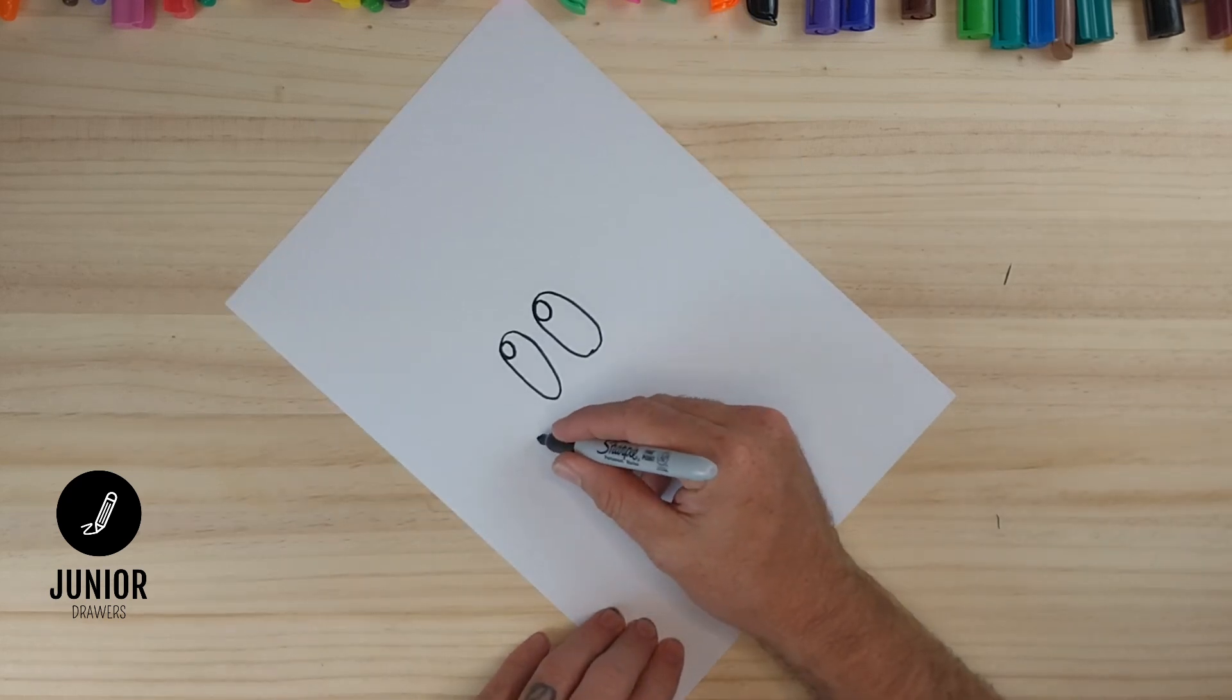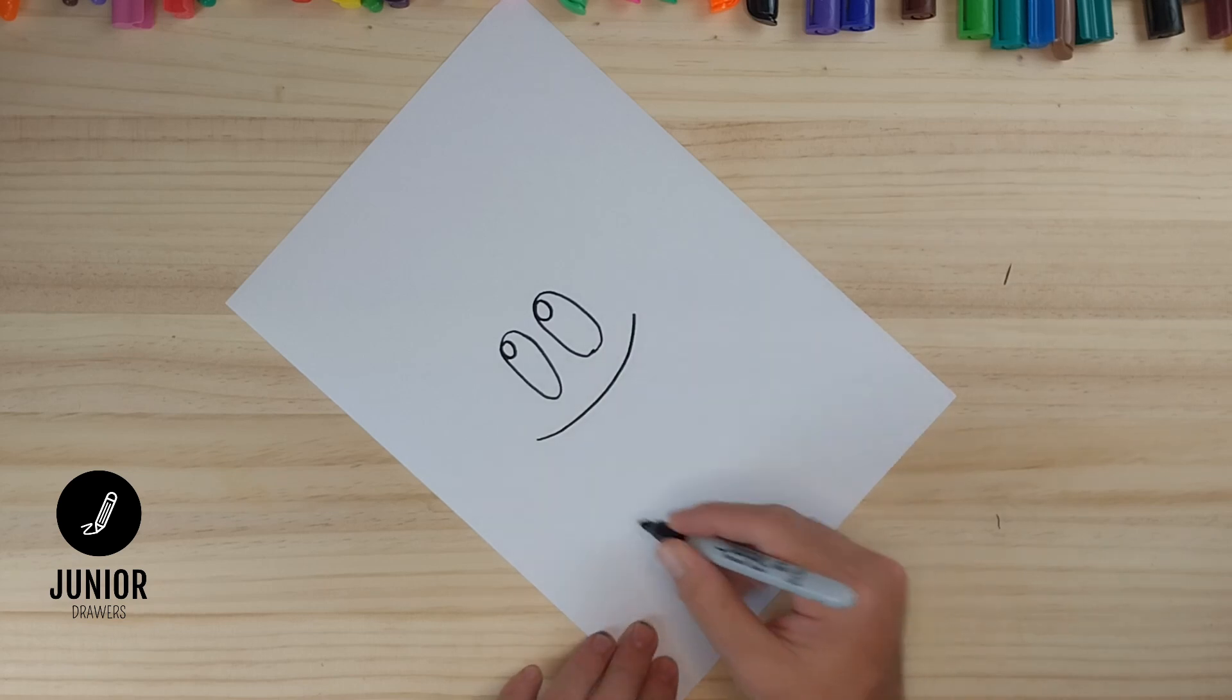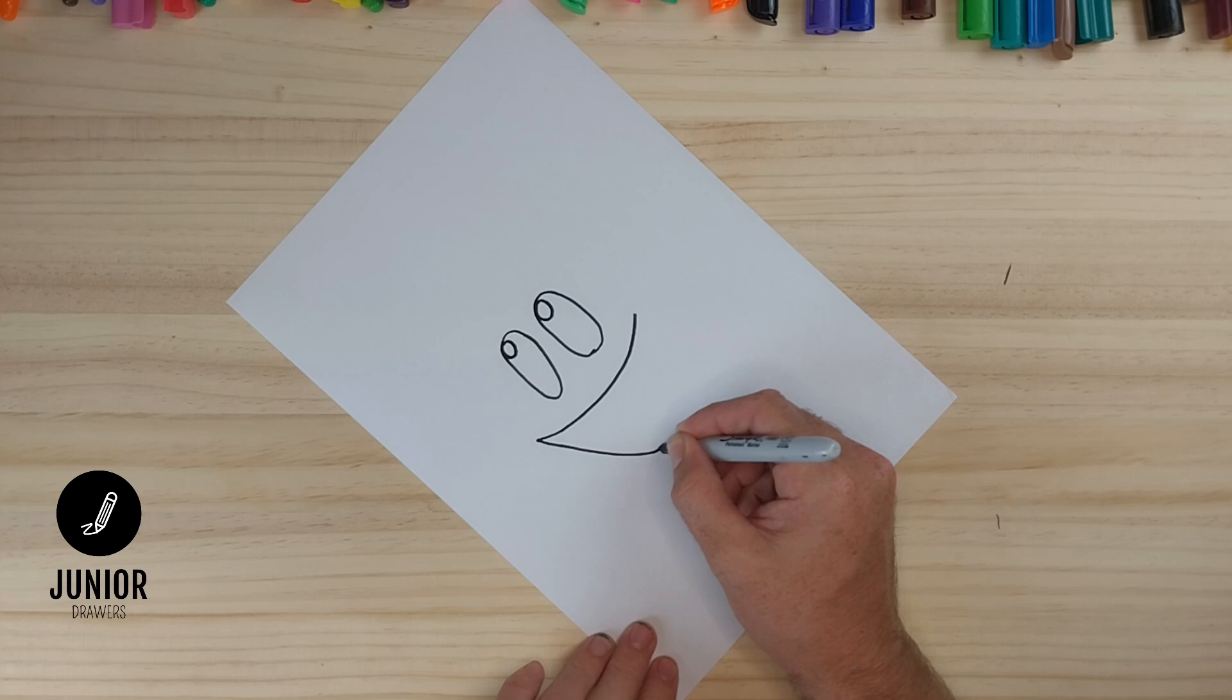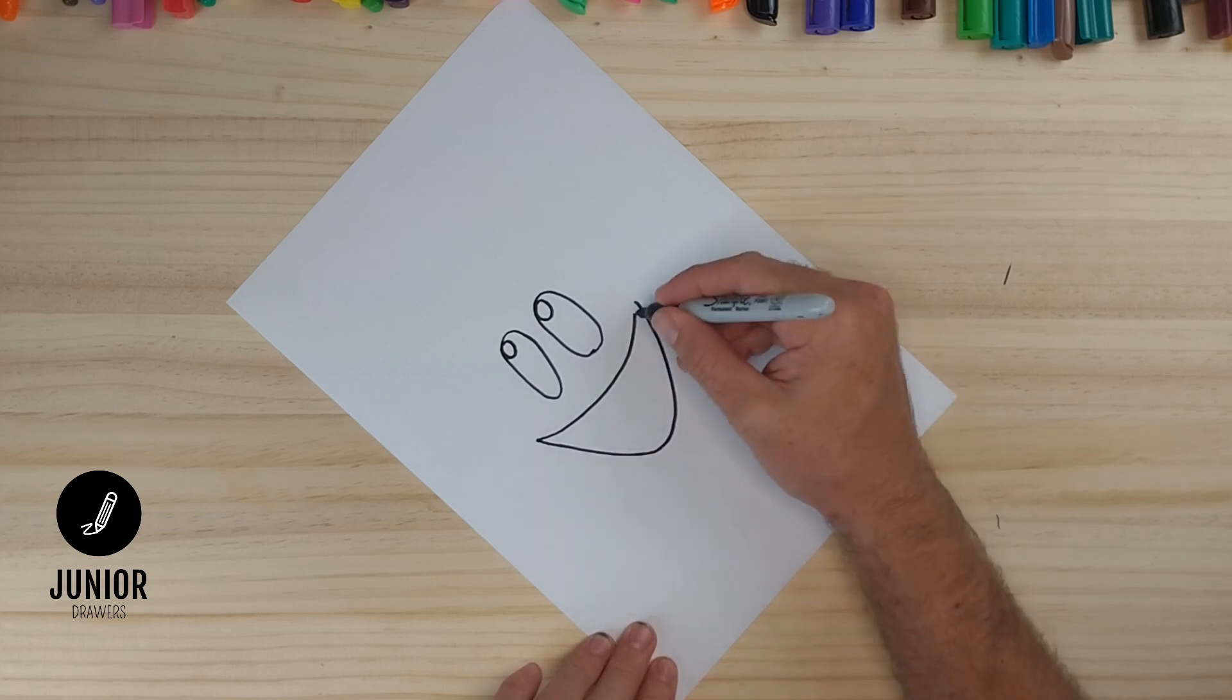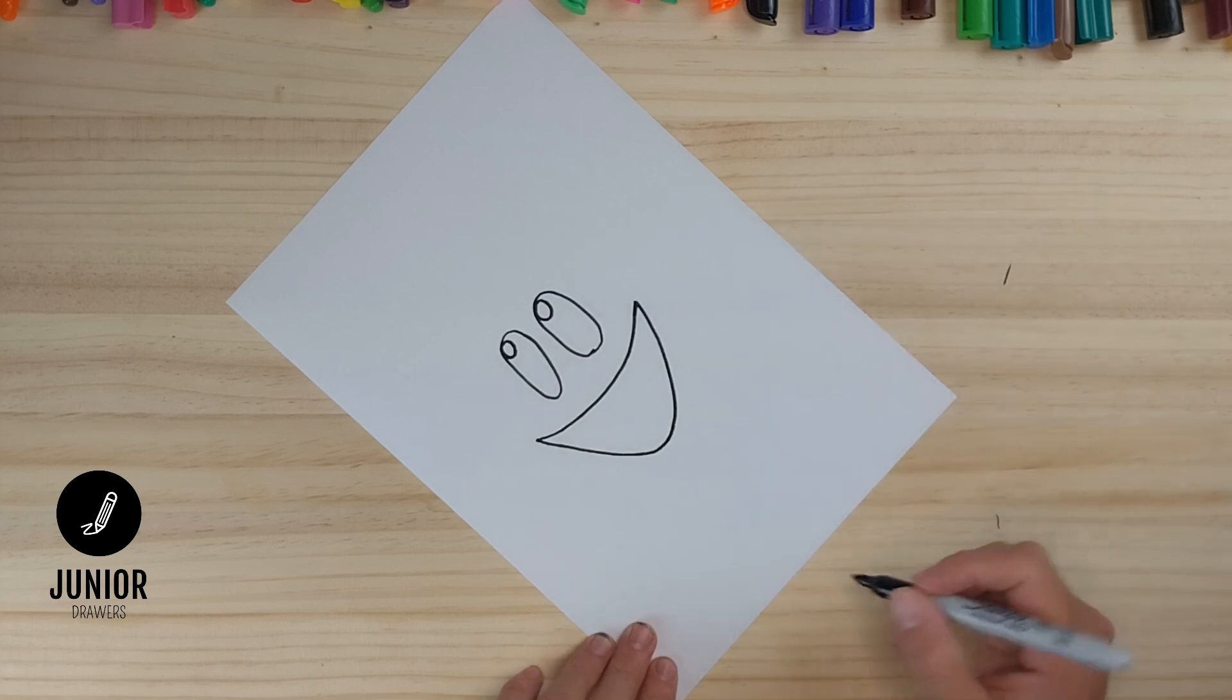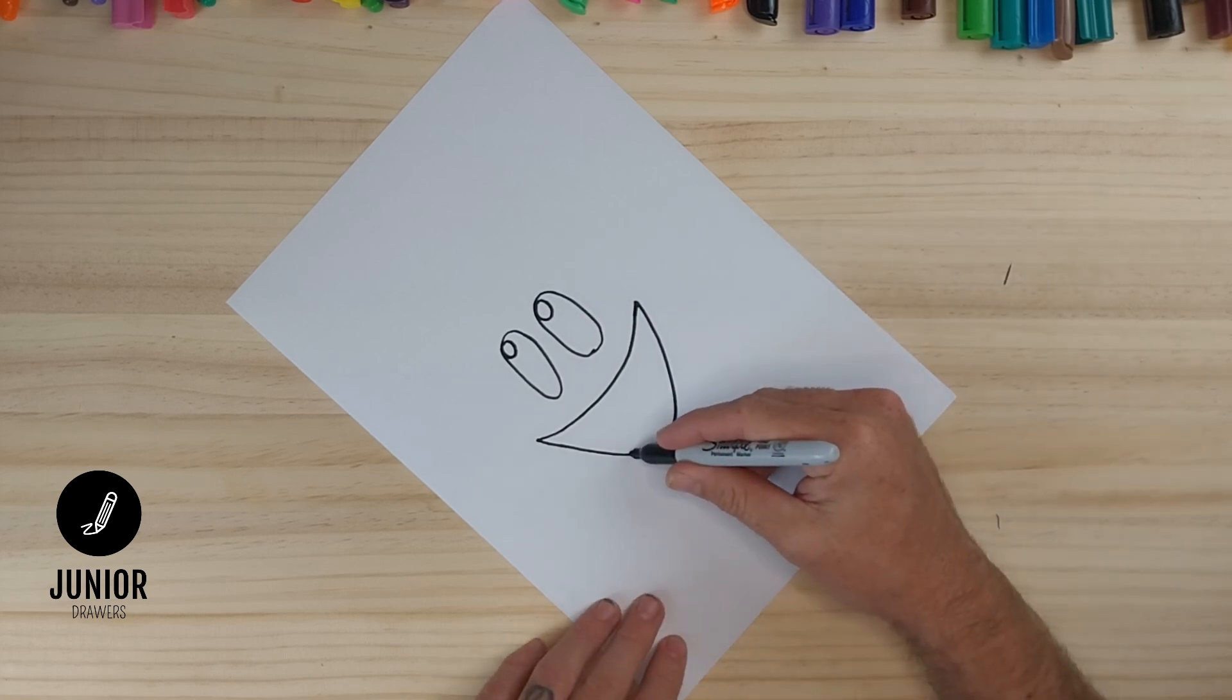Now we'll draw a curved line for our mouth and a second curved line that goes down and back up. And we can connect those lines there. And our tongue, which is just two curved lines that overlap.